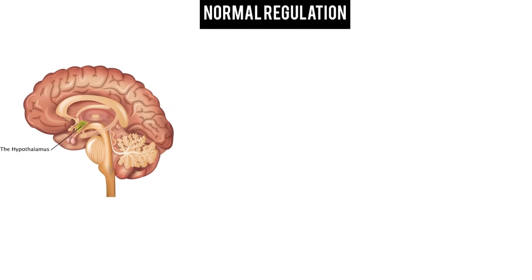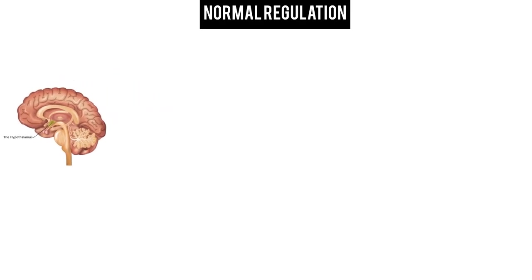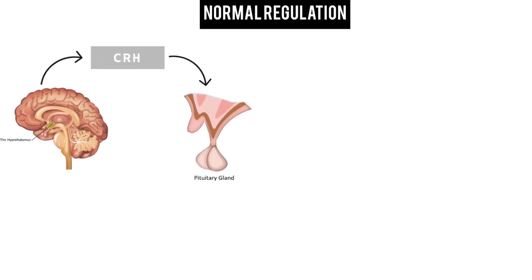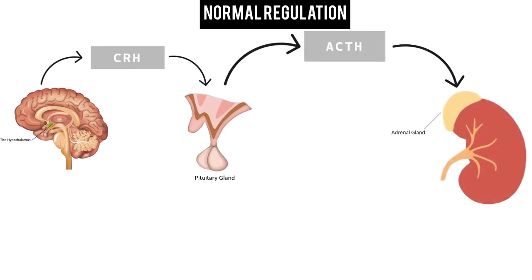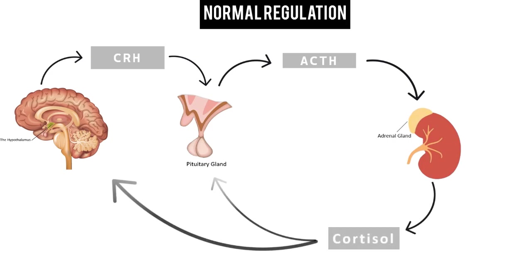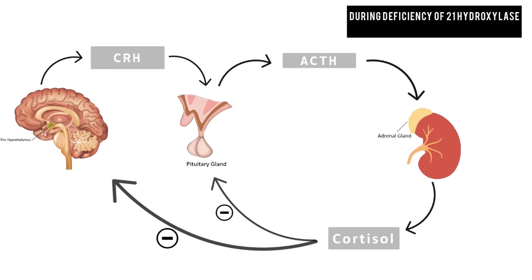Let's look at the normal regulation. The hypothalamus secretes CRH, which in turn acts on the pituitary for the release of ACTH. This ACTH acts on the adrenal cortex, which secretes cortisol. The cortisol hormone then gives a negative feedback mechanism to the hypothalamus and pituitary, resulting in decreased secretion of CRH and ACTH.